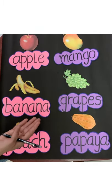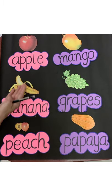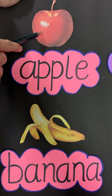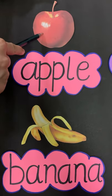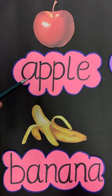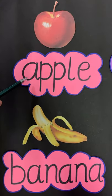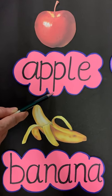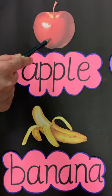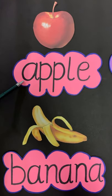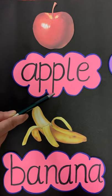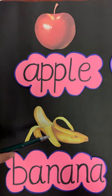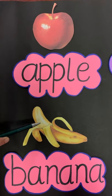First we learn all the spellings of these fruits. This is an apple, and the spelling of apple is A-P-P-L-E, apple.